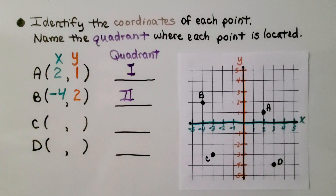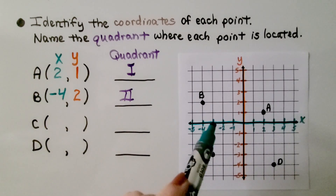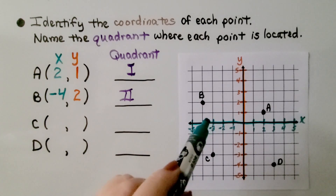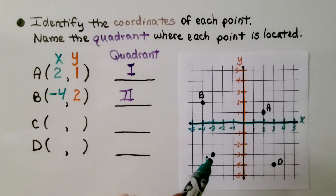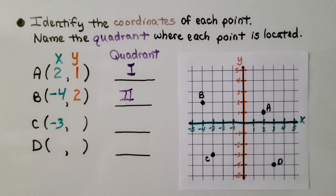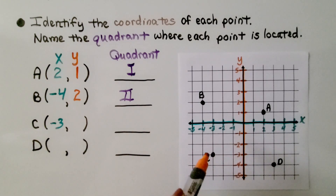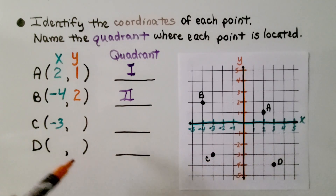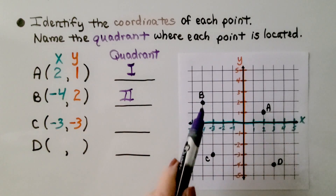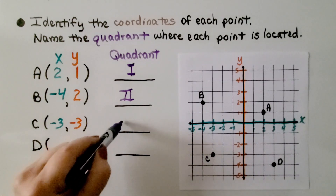For point C, looking at the x value, we come across to the left and come down at negative three — C is at negative three for x. And looking at the y value, it's at negative three for y as well. Going around the letter C — one, two, three — it's in quadrant three.